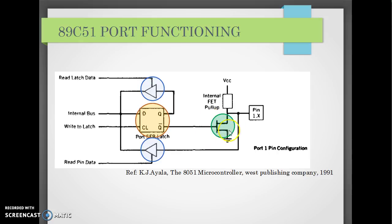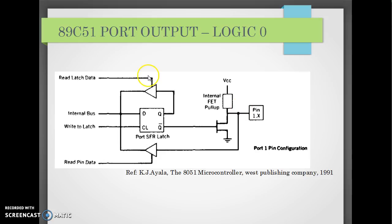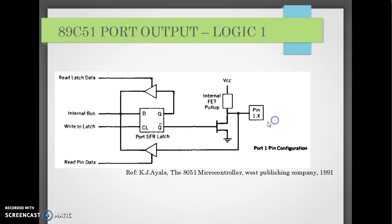There is a transistor connected to Q-bar of this latch and with active pull-up. This is the external pin of the microcontroller. When we write logic 0 to this D-Latch, Q becomes 0 and Q-bar becomes 1. This turns on the transistor. When this MOSFET is turned on, the pin is pulled down by the MOSFET and we get logic 0 on the pin.